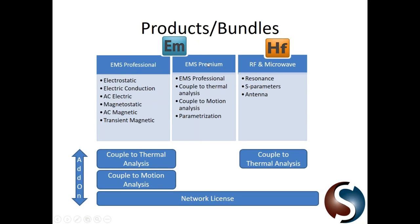The EMS product comes in two different flavors — EMS Professional and EMS Premium. EMS Professional has six different solvers organized by study type: electric modules including electrostatic, conduction, and AC electric, and the magnetic modules including magnetostatic, AC magnetic, and transient magnetic. You can couple this to a thermal simulation or a motion simulation. EMS Premium gives access to everything in EMS Professional plus parametrization — a powerful automating feature where you can select any SOLIDWORKS geometry and see how your performance varies as you vary that geometry. On the right side is our high-frequency bundle — HFWorks — which can also be coupled to thermal simulation.